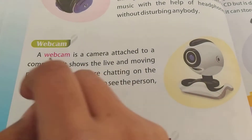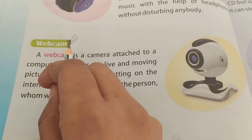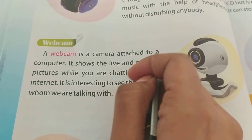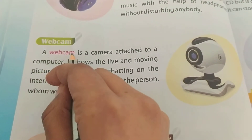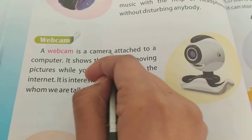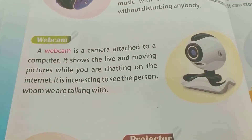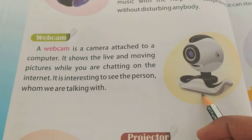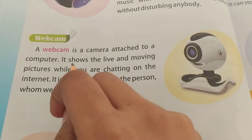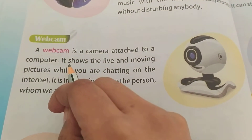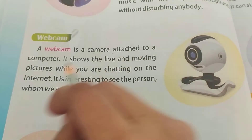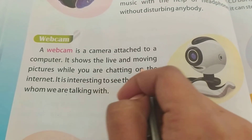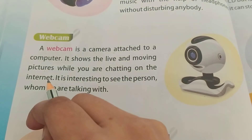Next heading: Webcam. Webcam is a camera attached to a computer. बैबकैम एक camera होता है जो computer से attach होता है. जैसा आपकी picture में दिया है ऐसा होता है दिखने में. It shows the live and moving pictures while you are chatting on the internet.